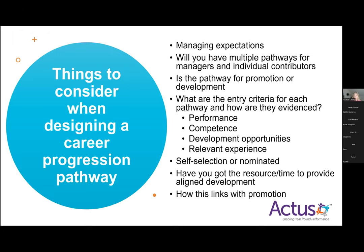Is it about people achieving objectives? Demonstrating competence? Getting development opportunities? Having relevant experience? It's probably a combination. You might have a role profile — like a job description — for each level of that career pathway, defining the role, skills, expertise, and competencies required. That gives people a target: they know what they need to achieve to get somewhere. You can then use tools like 360 feedback to assess against it, or other talent planning tools.